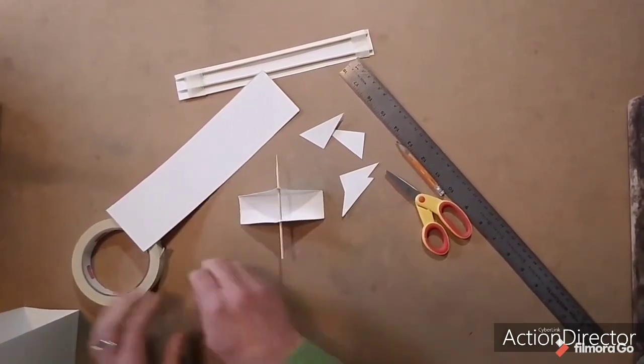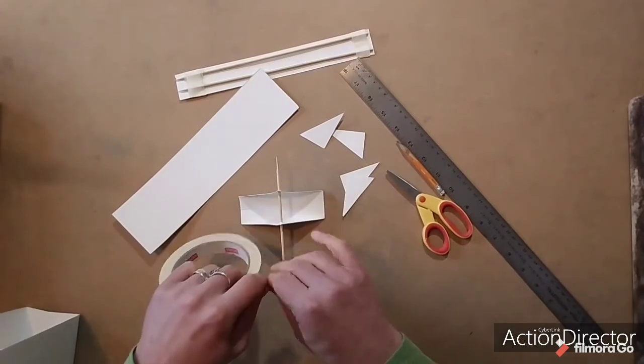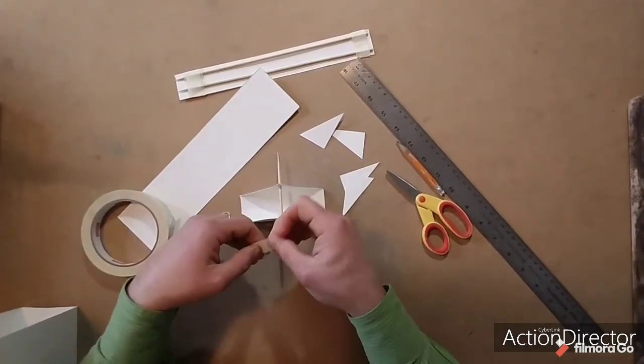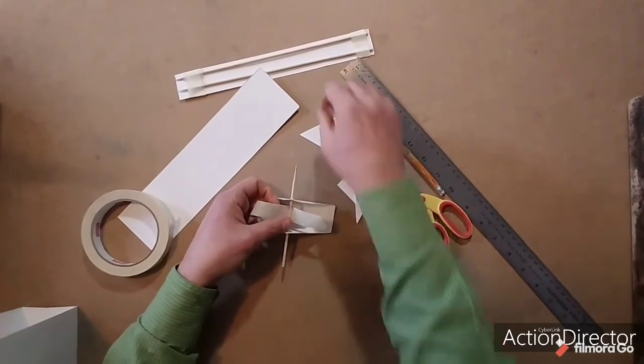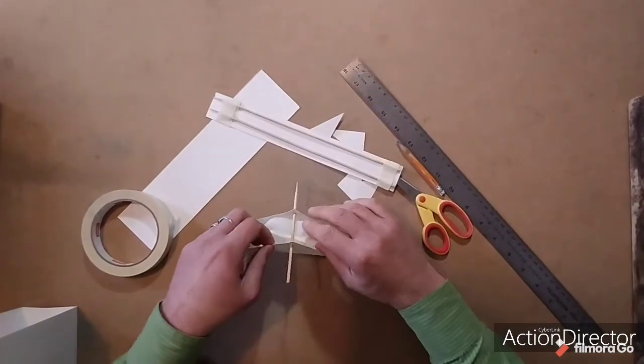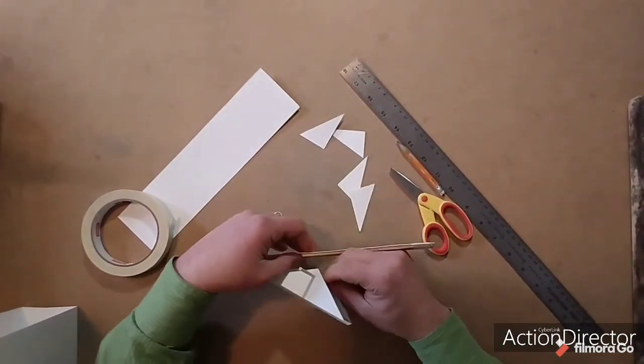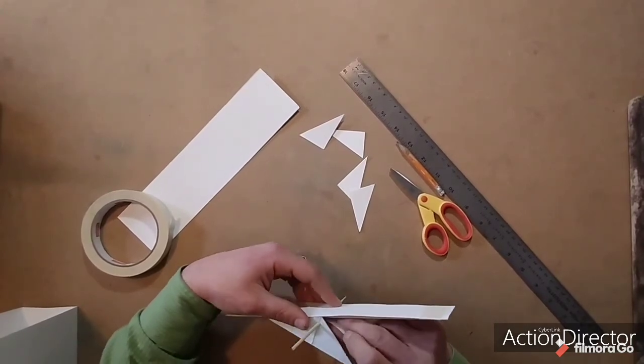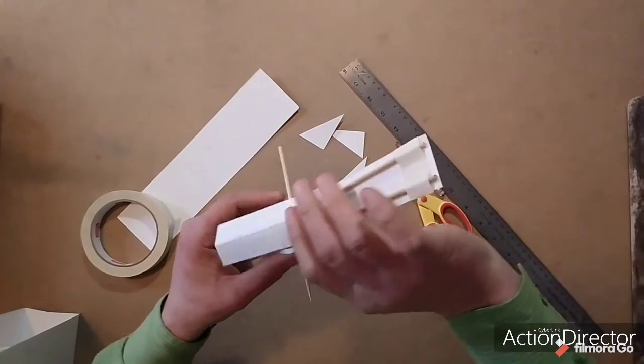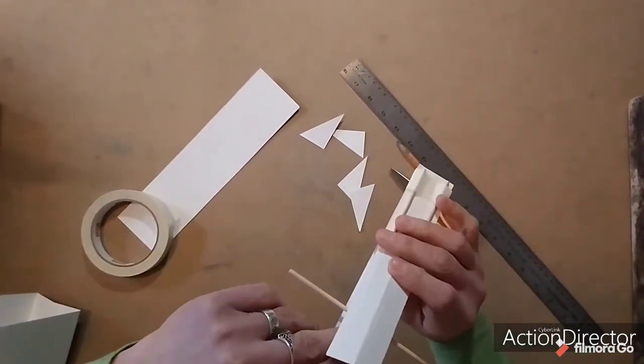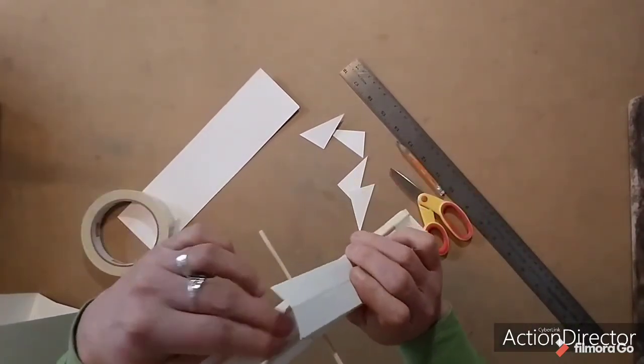If you find this difficult, don't hesitate to ask Mom and Dad for help. Once you've poked it through, put a piece of tape underneath the skewer, and then place the fulcrum in the middle of your beam. Rub down the tape onto the beam so it sticks there.